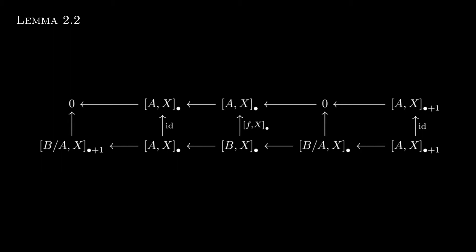Well, notice that morphism is the thing we are trying to say something about. In other words, we want to show that if f is an E-equivalence, then f_X bullet is an isomorphism. Well, by what we just said, if we can show that f being an E-equivalence implies B/A, X bullet to 0 is an isomorphism, i.e. that B/A is E-acyclic, then we will have our result. Okay, so we want to show that if f is an E-equivalence, then B/A is E-acyclic.